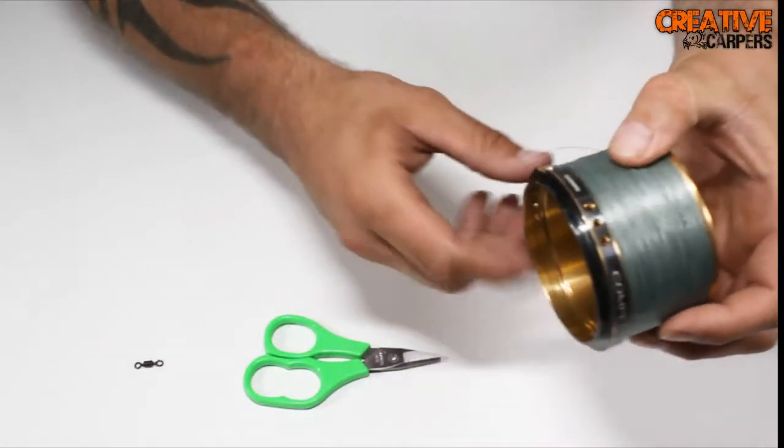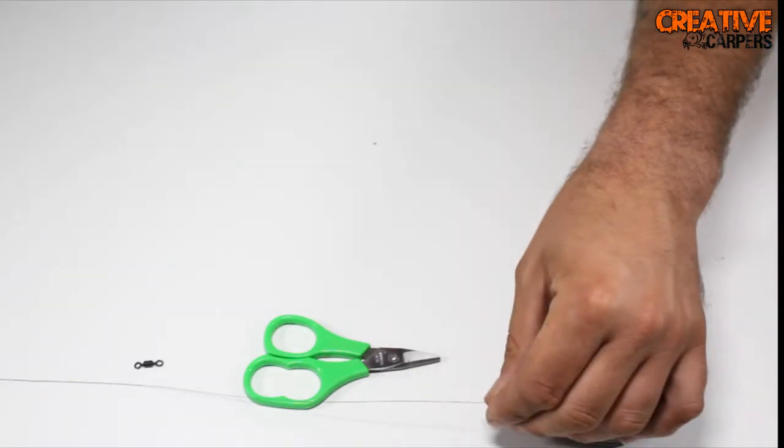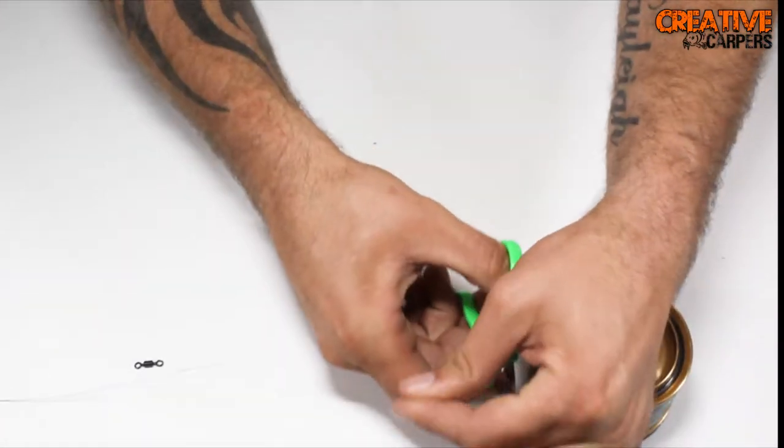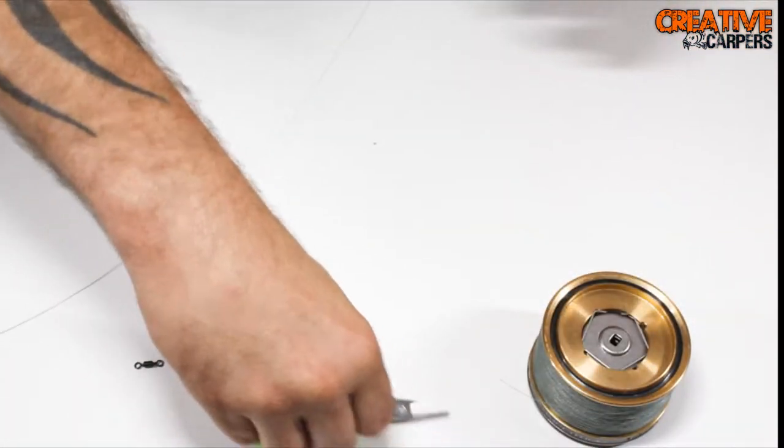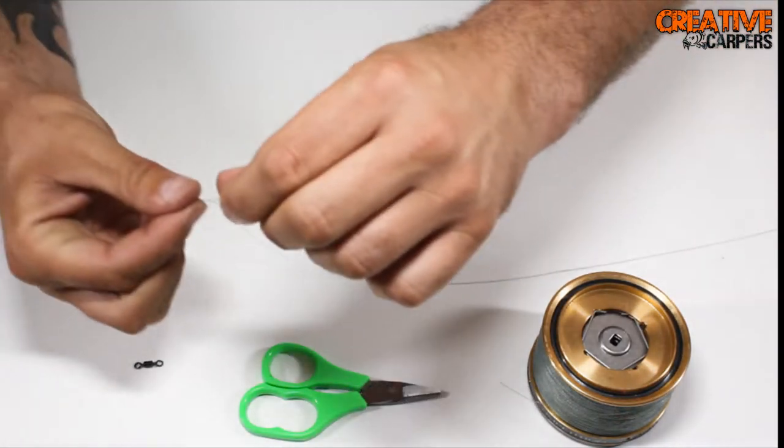To begin tying the griller knot, take your desired length of material you're going to be using. Normally it's the main line off your reels, but in this case for demonstration purposes, I'm going to use braid.